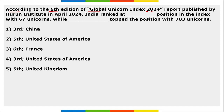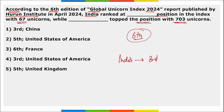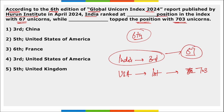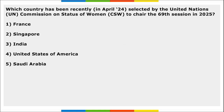According to the sixth edition of the Global Unicorn Index 2024 report published by the Hurun Institute in April, India ranked third with 67 unicorns, while the United States secured the top position with 703 unicorns. Take a note — India's rank is third, with 67 unicorns, and the USA had a total of 703 unicorns.